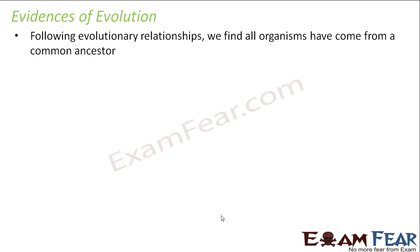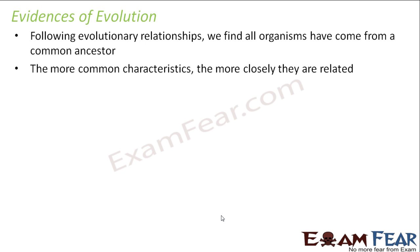Following evolutionary relationships, we find all organisms have come from a common ancestor. It is very strange to believe, because the variety of organisms which we see on this earth are completely different from each other. So it becomes very difficult to accept that they have all come from a similar kind of organism. What is said is that the more common characteristics they share, the more closely they are related. The more similar two people look, the more close their relations are.